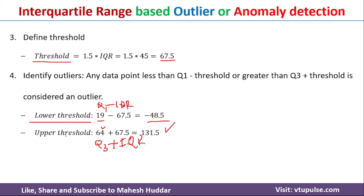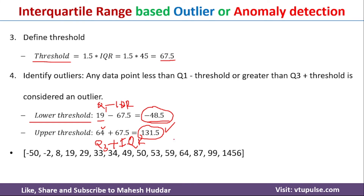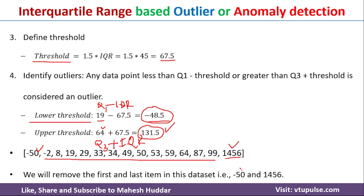Now with the lower threshold of minus 48.5 and upper threshold of 131.5, we can easily detect the outliers. Anything less than the lower boundary is an outlier, and anything greater than the upper boundary is an outlier. In this dataset, minus 50 is less than minus 48.5, so it is an outlier. Similarly, 1456 is greater than 131.5, so it is also an outlier. All remaining values fall within the range and are not outliers.